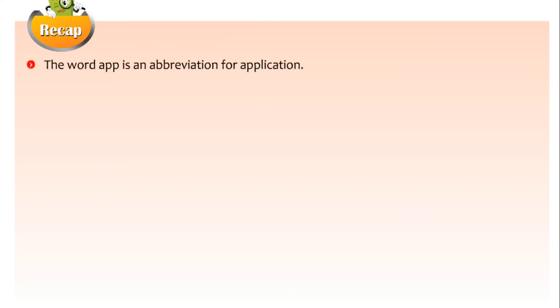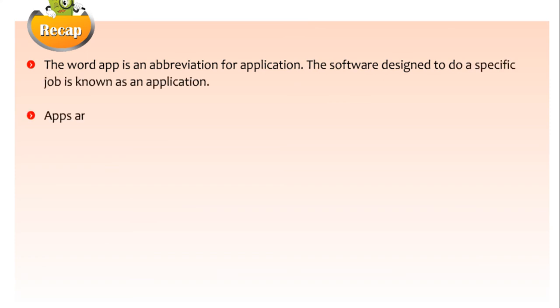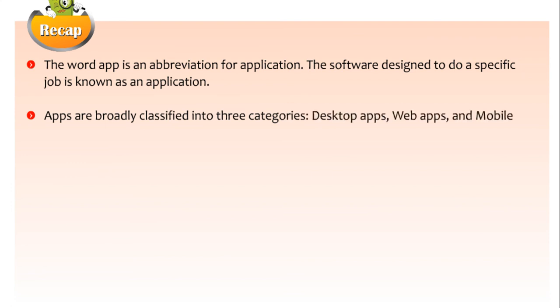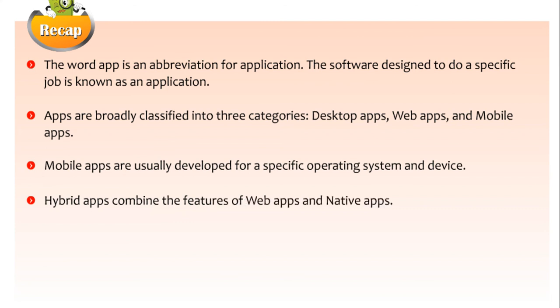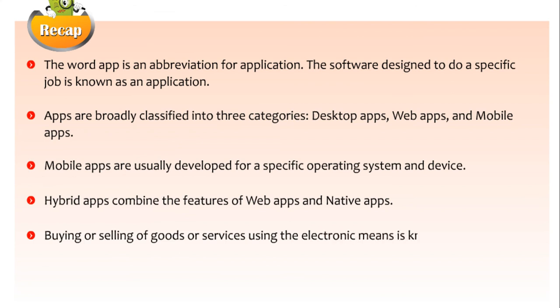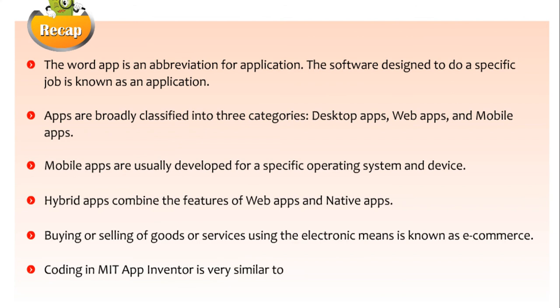Let us take a recap of this chapter. The word app is an abbreviation for application. Software designed to do a specific job is known as an application. Apps are broadly classified into three categories: desktop apps, web apps, and mobile apps. Mobile apps are usually developed for a specific operating system and device. Hybrid apps combine the features of web apps and native apps. Buying or selling of goods or services using electronic means is known as e-commerce. Coding in MIT App Inventor is very similar to Scratch.